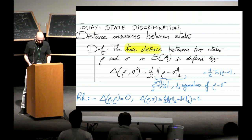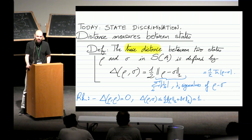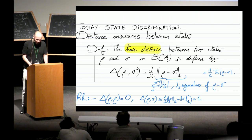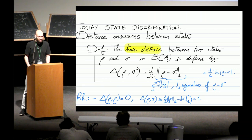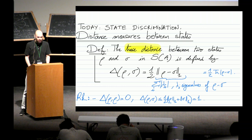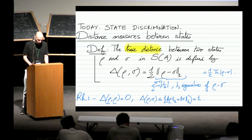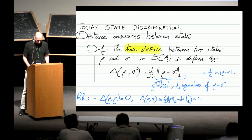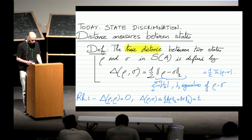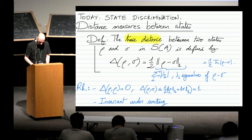As I discussed yesterday, the topic for today is going to be state discrimination. The question is: I have two or even more states and I would like to distinguish between them. What is the optimal way of doing this and what are the different regimes of interest for this question? This is what we'll look at today. We'll start with something most of you are probably familiar with.